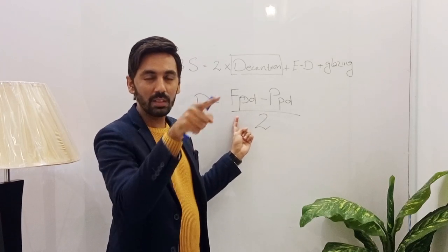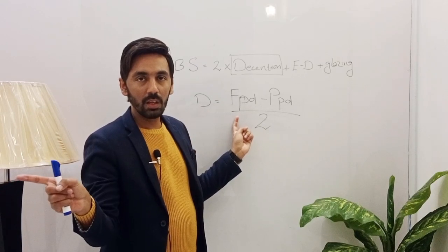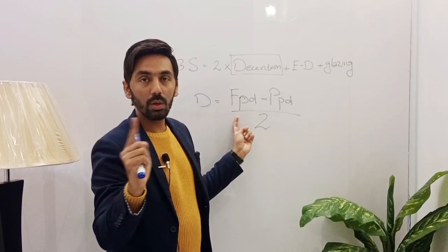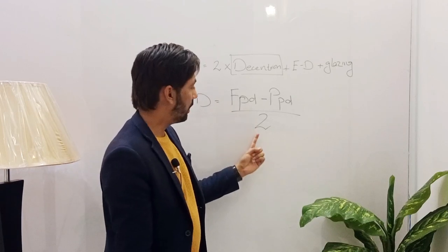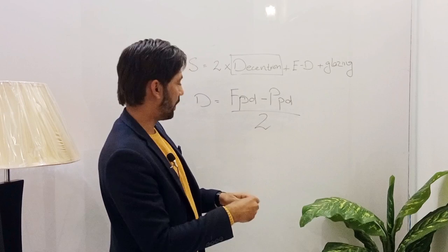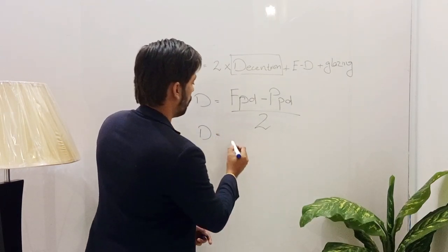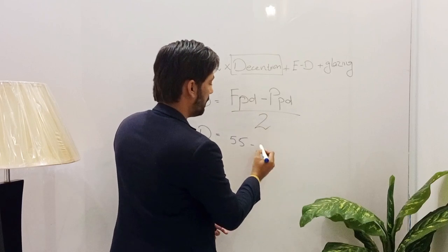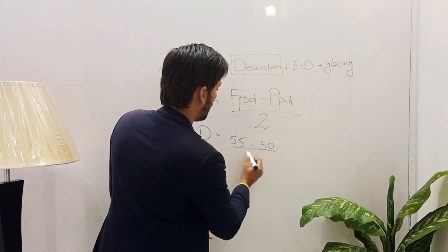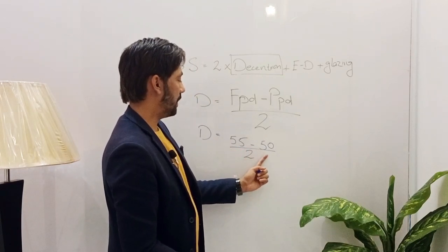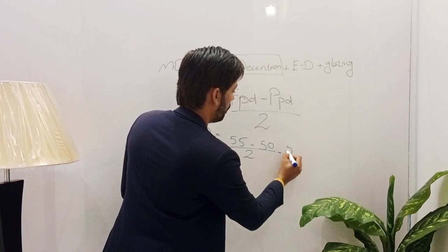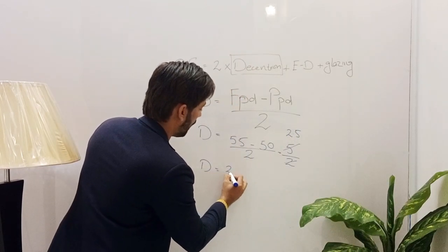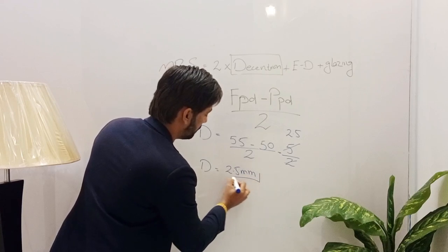We mark a central vertical line and central horizontal line on the right and left sides of the frame, and where those lines cross, the distance between those two central dots is the frame PD. For example, if the frame PD is 55 and the patient's PD is 50, then: 55 minus 50 equals 5, divided by 2 equals 2.5 mm — that is the decentration.